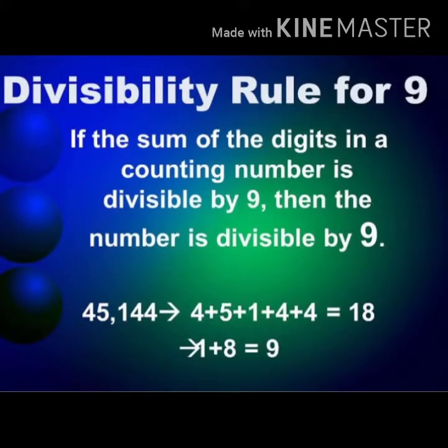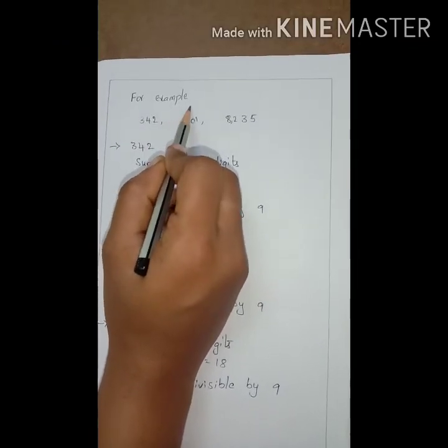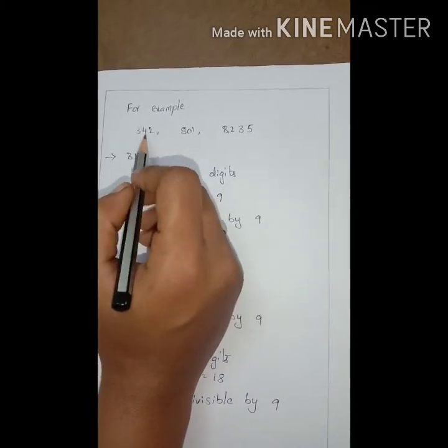Now we are going to discuss the divisibility rule by 9. For 9, you have to find the sum of the digits. Check if the sum is divisible by 9 or not. If it is, then the entire number is divisible by 9; otherwise, the entire number is not divisible by 9. Here are some examples: 342, 801, 8,235.